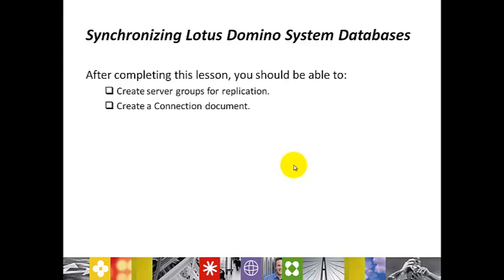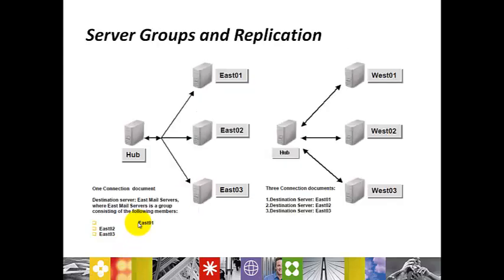Server databases replicate using groups for server access and database access to facilitate administration. Administrators can also use groups to schedule replication from one server to a group of servers. Using a group for server replication facilitates administration by reducing the number of connection documents required to replicate with multiple servers, and it simplifies the process of including a new server in the replication tool policy.